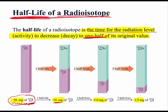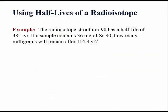Let us take a look at a real-life example. The radioisotope strontium-90 has a half-life of 38.1 years. So, the half-life, which is usually written like that, is equal to 38.1 years.